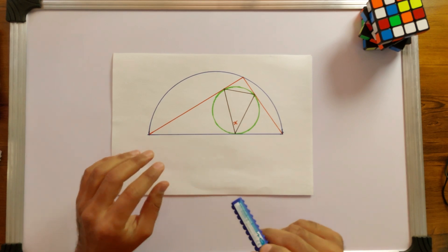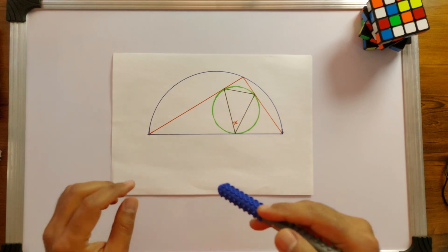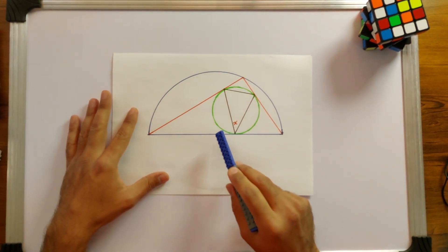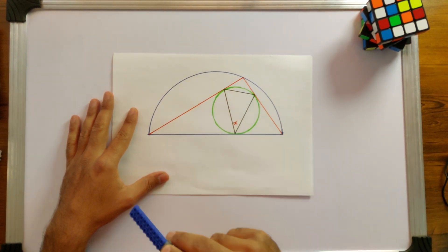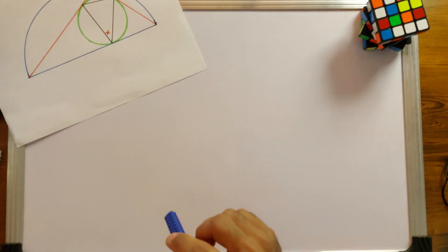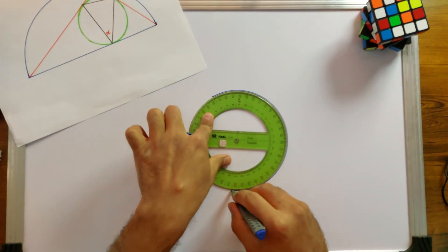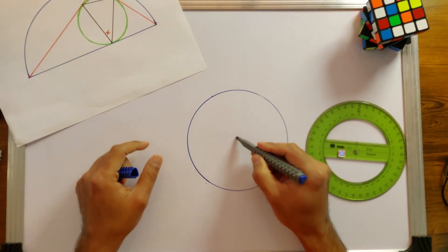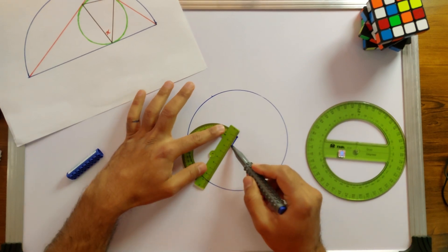One of the main theorems of circles is that the angle at the center of any circle is twice the size of the angle at the circumference. Let me draw a circle with a center point to illustrate this.